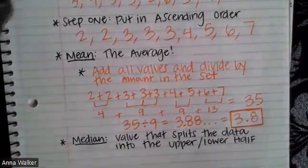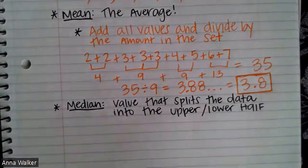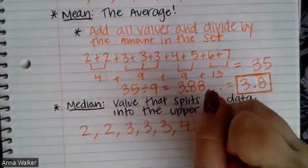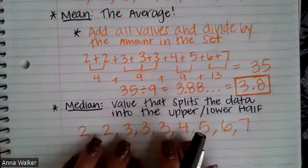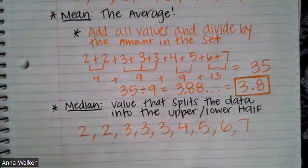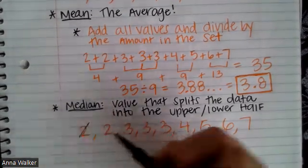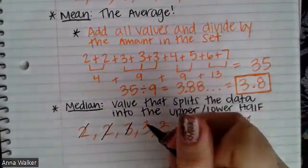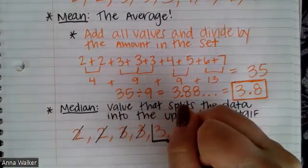Another measurement, the second M in MMMR, is the median. That is the value that splits the data into the upper and the lower half. So if I have my numbers 2, 2, 3, 3, 3, 4, 5, 6, and 7, I am trying to find the number that splits the data into my higher values and my lower values. One quick way to do this is to use the cancel out method. I just cancel out a number from the front, I cancel out a number from the back, and I keep alternating and doing this process until I end up with the value that is in the middle. Sometimes you'll end up with more than one value in the middle. In this case, the median is going to be 3.